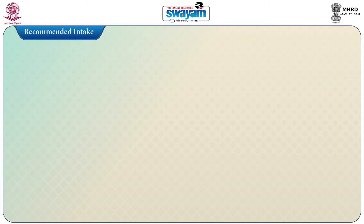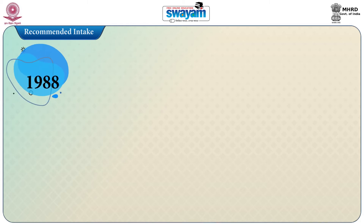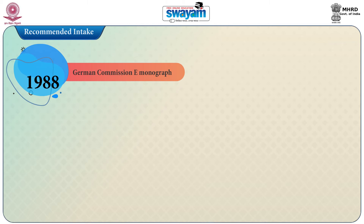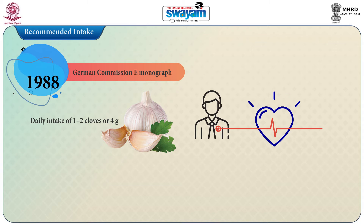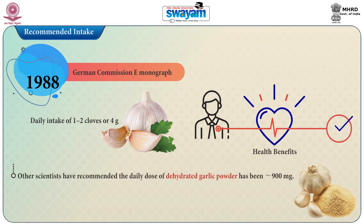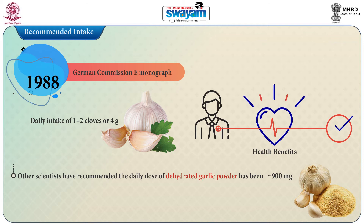Now, regarding recommended intake — there is no standard available for intake of garlic. In 1988, the German Commission E monograph proposed that a daily intake of 1 to 2 cloves of garlic or 4 grams of fresh garlic may have health benefits. Other scientists have recommended that the daily dose of dehydrated garlic powder be 900 milligrams.